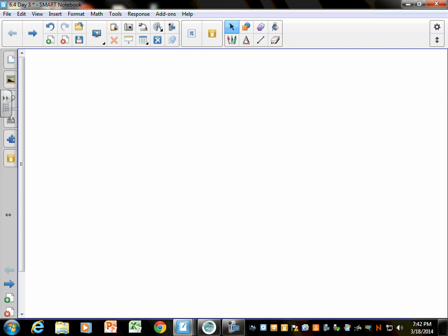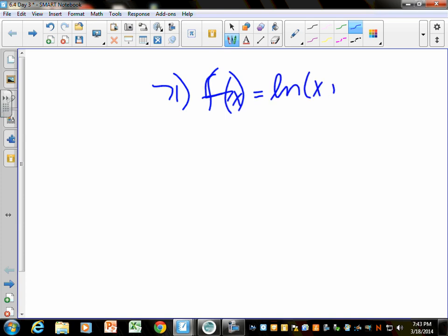And then 63 through 70, you should have been matching up using the transformations, knowing what a negative does, knowing what a number on the outside does. 71 is the only other one that I made you graph. That would say f(x) there. Again, a 4 added to the inside tells me that this is going to move less 4.